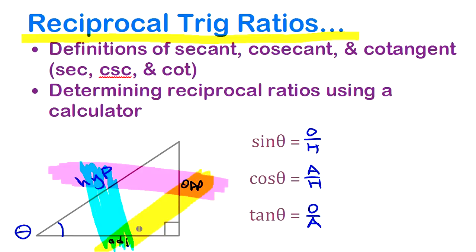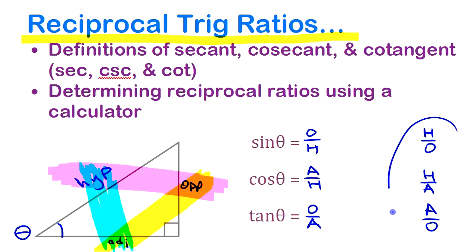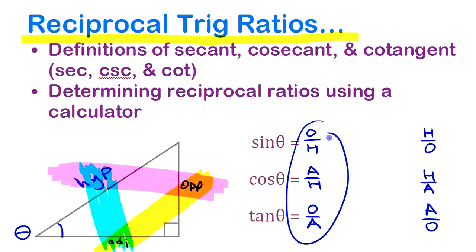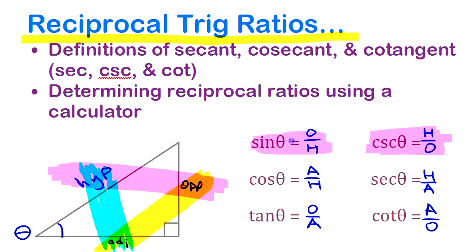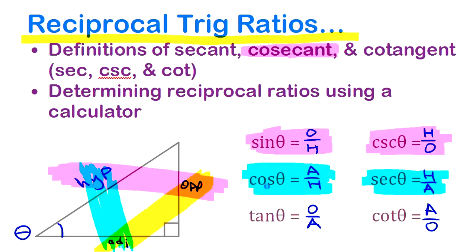There are actually two ways you could write each ratio. Instead of opposite over hypotenuse, you could write hypotenuse over opposite. Instead of cosine, you could write hypotenuse over adjacent. And instead of tangent, you could write its reciprocal, adjacent over opposite. These three ratios are just the reciprocals of the original three, and they each have a name: cosecant is the reciprocal of sine, secant is the reciprocal of cosine, and cotangent is the reciprocal of tangent.